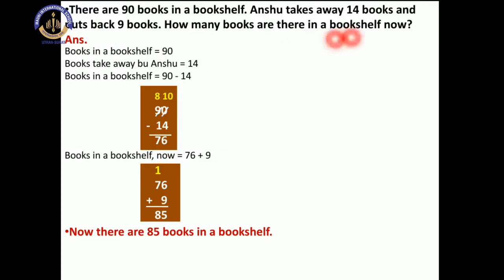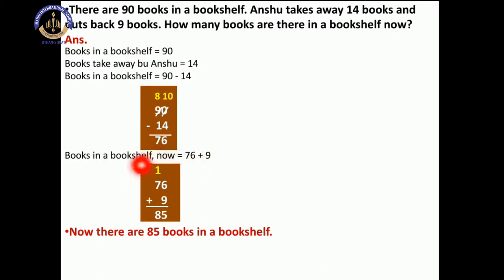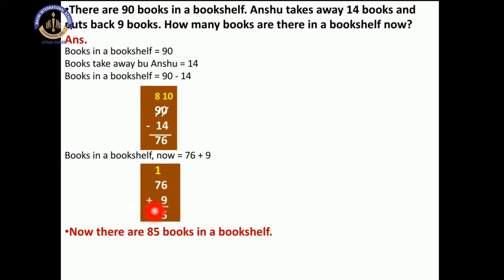Anshu puts back 9 books, so we do 76 plus 9. 6 plus 9 is equal to 15, write 5 and carry 1. 7 plus 1 is equal to 8. So now there are 85 books in the bookshelf. Right? Very good.